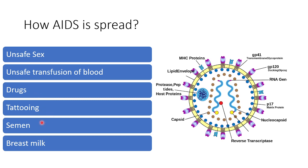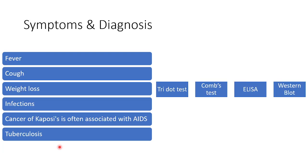Tattooing and semen, blood, and breast milk also have the potential to spread HIV.